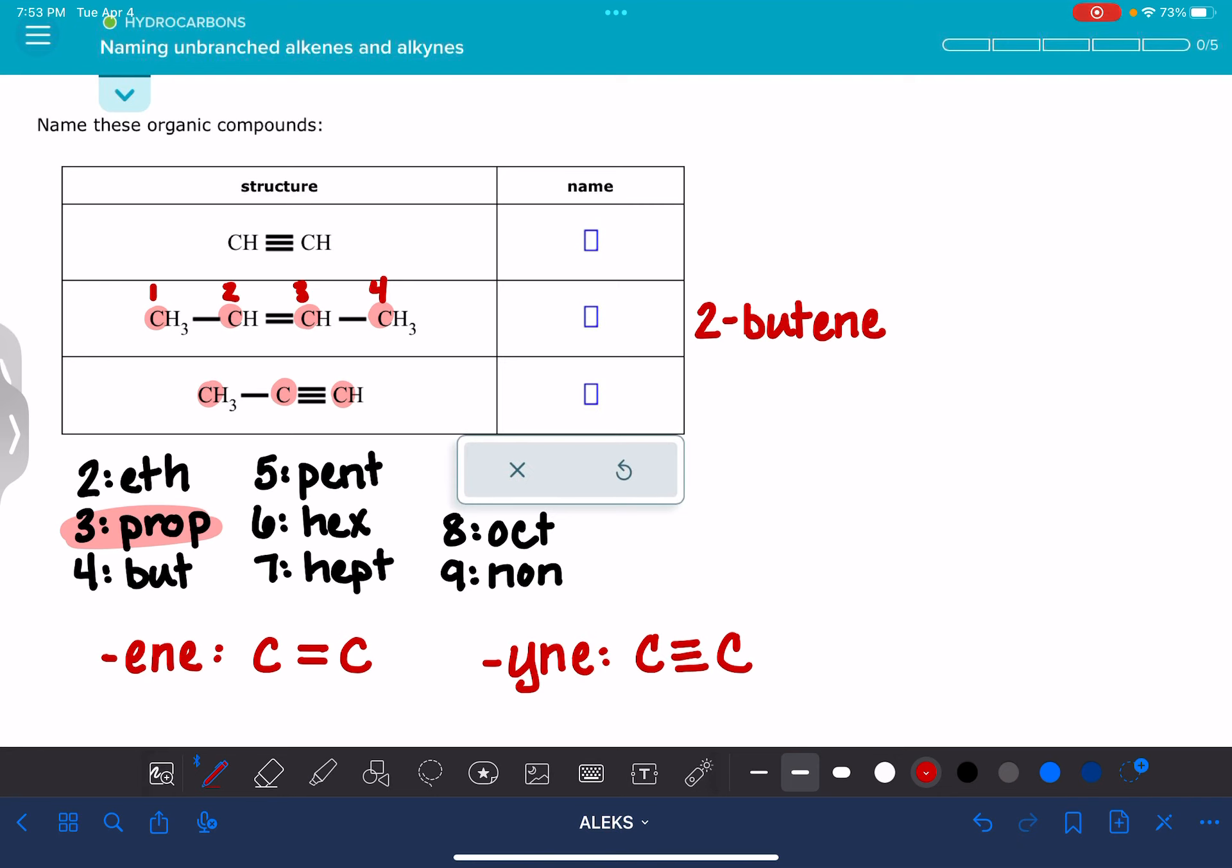We want to number the carbon chain so that the triple bond gets the lowest possible starting point. That means for this molecule, we're going to be numbering it from right to left, so that the triple bond starts at carbon number one and goes to carbon number two. If we numbered it this way, the triple bond would be starting at two, going to three. That's not the lowest possible number.